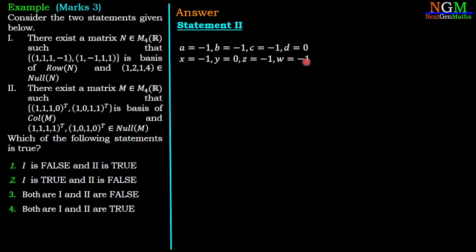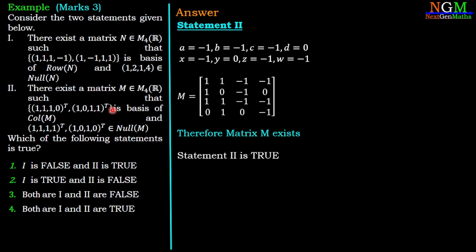If we substitute these values in M, we are able to find the matrix M which satisfies these two conditions. Therefore, matrix M exists with the given conditions. So statement 2 is true. Statement 1 is false and statement 2 is true, which is option number 1. So option number 1 is the correct answer.